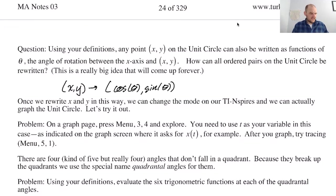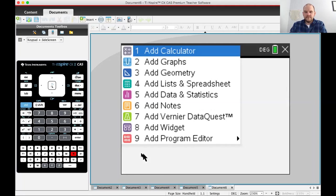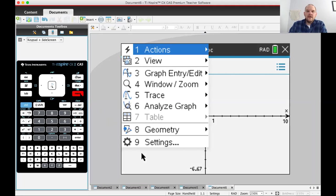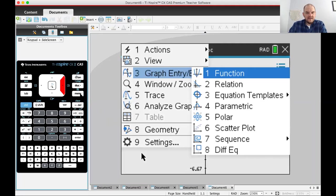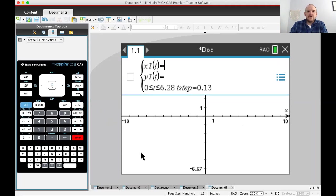What I want to show you now is there's actually a thing you can do on your calculator. Take out your calculator. I'm going to press menu, then go to graph entry edit, and go down to option 4 for parametric. We don't know what this is yet, but you're going to get a sense of it pretty quickly.